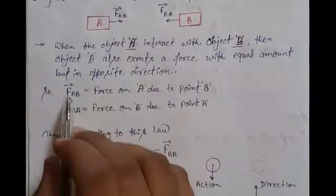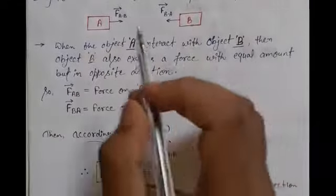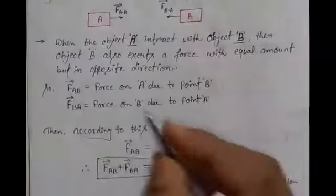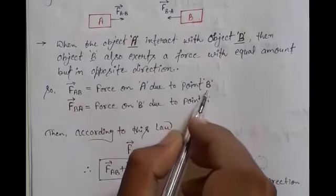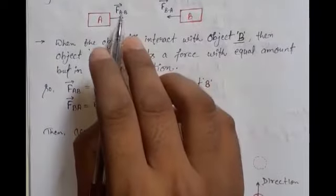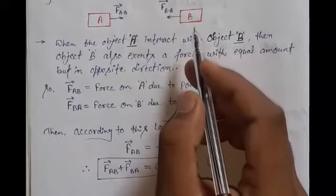So here F_AB, F_AB means object A to B. F_AB is equal to force on A due to point B, yani ke F_AB means A to B, yani ke force A point B per exert karti hai, yani ke object B.